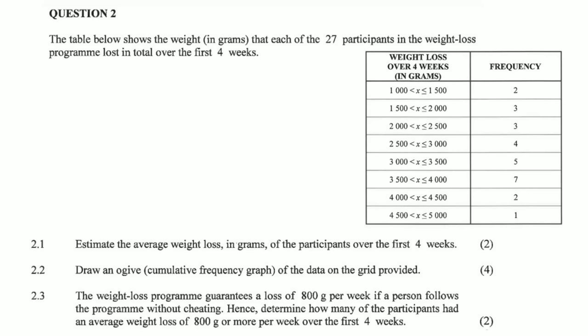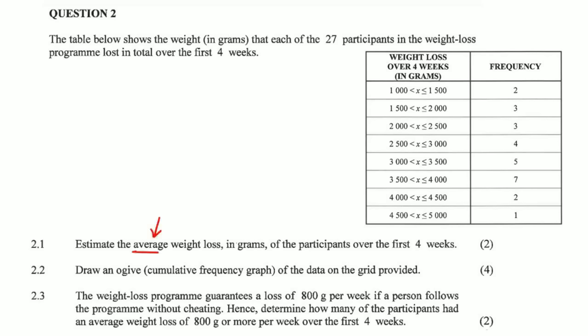The table below shows the weight in grams that each of the 27 participants lost in total over the first four weeks. For example, two people lost between 1000 and 1500 grams, five people lost between 3000 and 3500 grams, and one person lost between 4500 and 5000 grams. Question: estimate the average weight loss in grams.